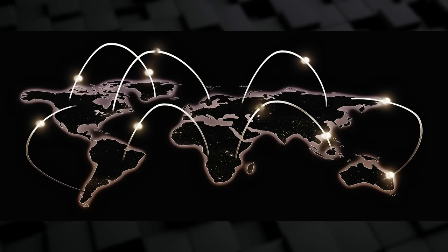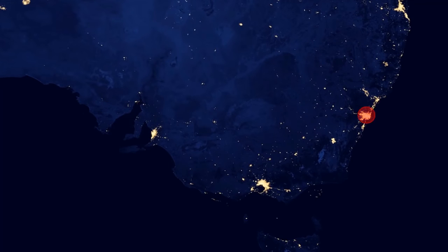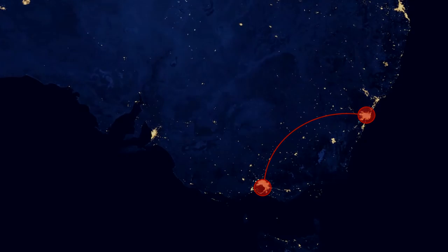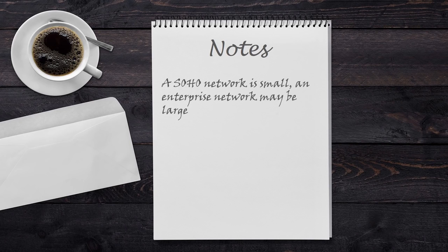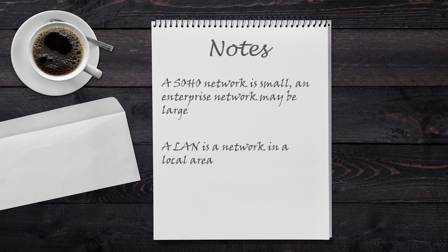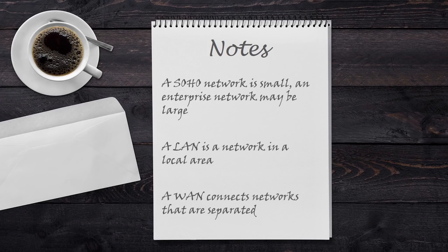A bank's network is going to be larger than just one building — banks have offices all over the country and all over the world. Even though they are far apart, these networks can be joined together. This is called a WAN, or Wide Area Network. Imagine you work for a company with an office in Sydney and an office in Melbourne — you could contact a service provider and they can connect these offices for you. WANs are a topic all of their own, so we'll cover them in detail in a later video. In summary: a SOHO network is very small while an enterprise network may be very large. A LAN is a collection of network devices in a local area like a single building, and a WAN connects networks that are far apart.